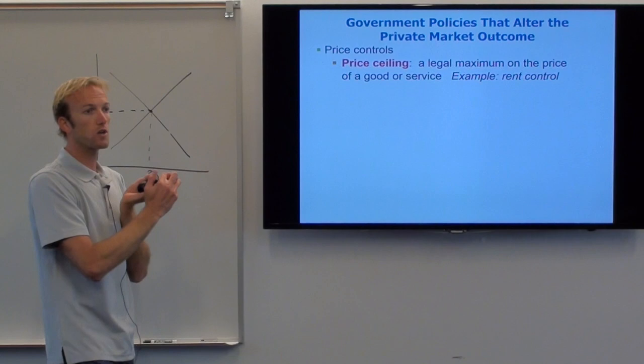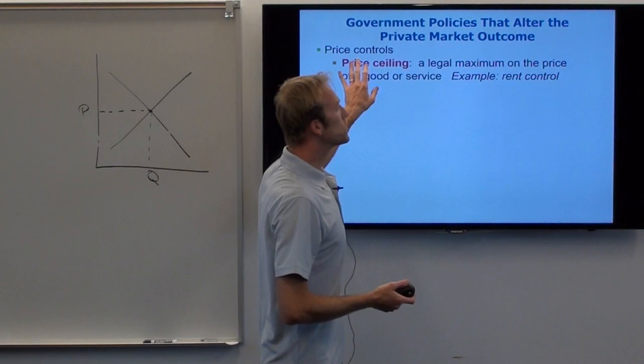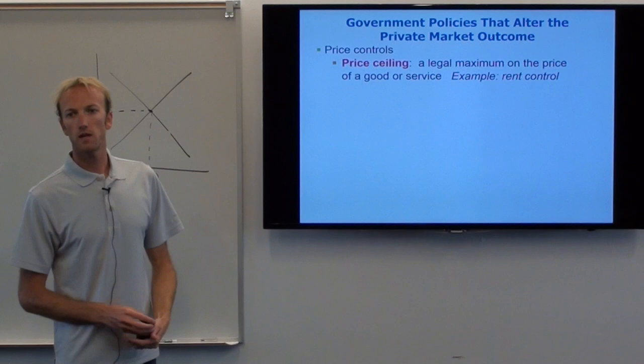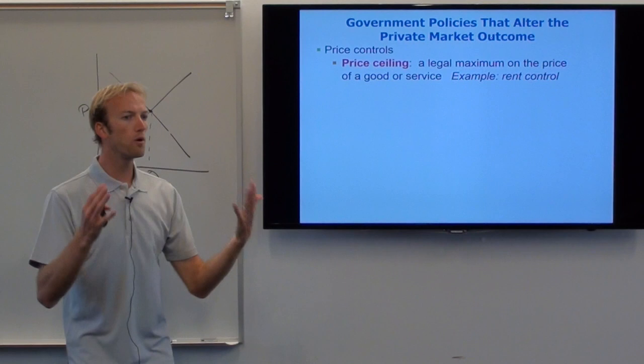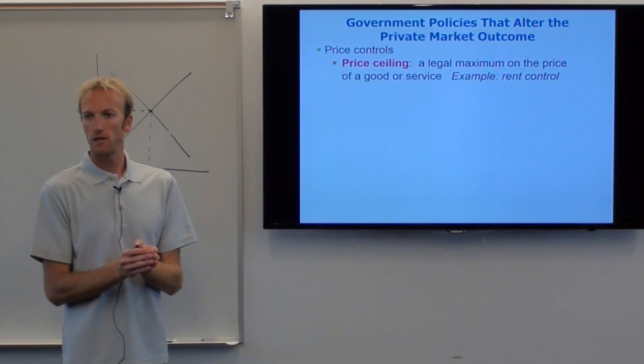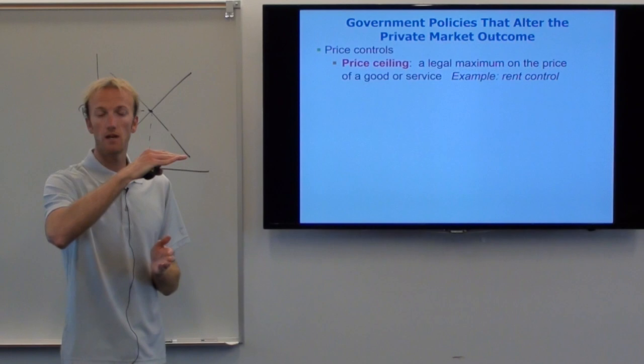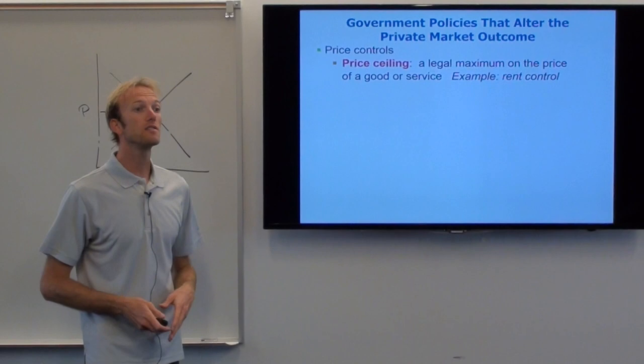Not super common, but the most common example is rent control. In New York City, for example, it's illegal to charge more than — let's say $1,500 — for a one-bedroom apartment. The city has imposed rent control; we call that a price ceiling. The price can be under $1,500, but it cannot be over $1,500. Like the ceiling here — I can stay under the ceiling, but I can't get above the ceiling.